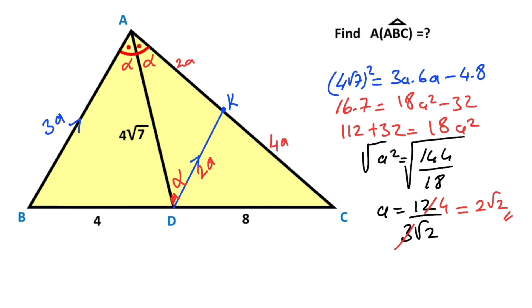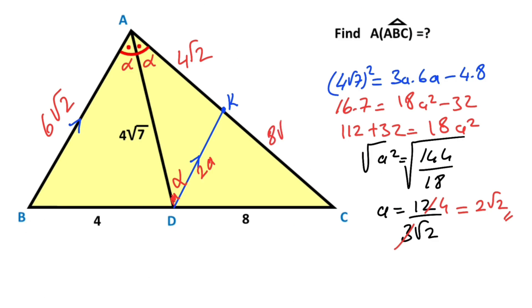So 3a equals 6√2, 2a equals 4√2, and 4a equals 8√2. We now have all the key segment lengths derived from a = 2√2.